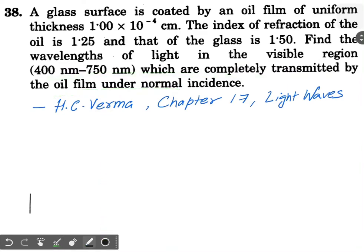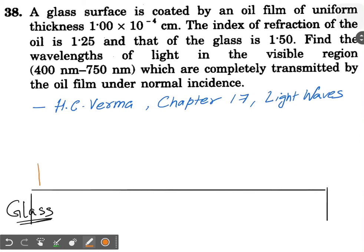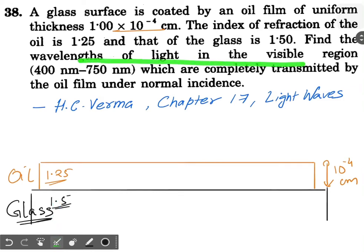Let's understand the question. We draw the glass surface, and above the glass surface we have an oil layer. The thickness of the oil layer is 10 to the power minus 4 centimeters. The index of refraction is 1.25 for the oil and 1.5 for the glass. So glass is denser than the oil. They are asking us to find the wavelengths of light in the visible region which are completely transmitted by the oil film under normal incidence.